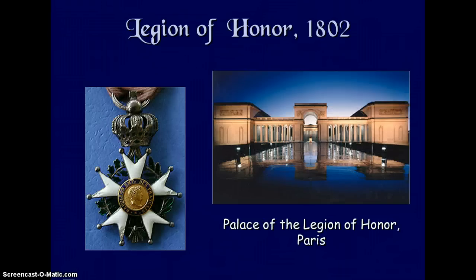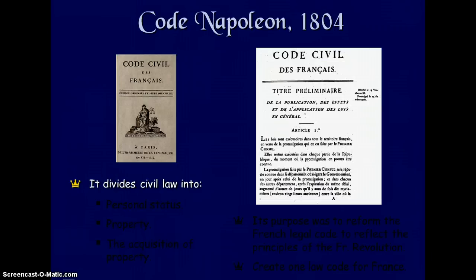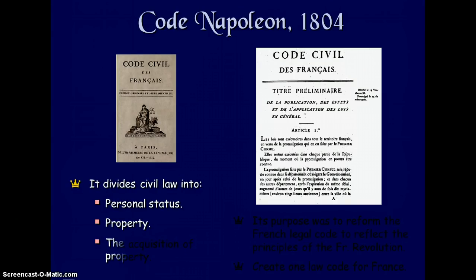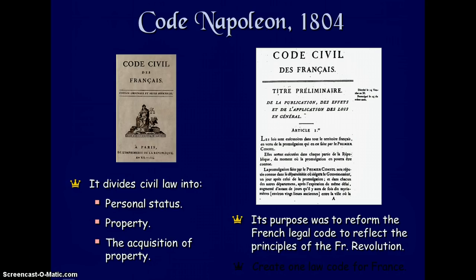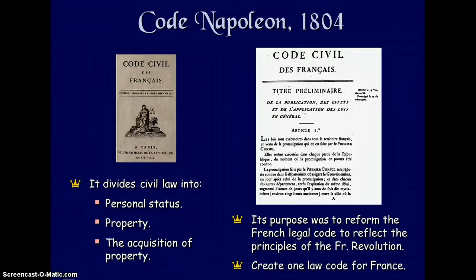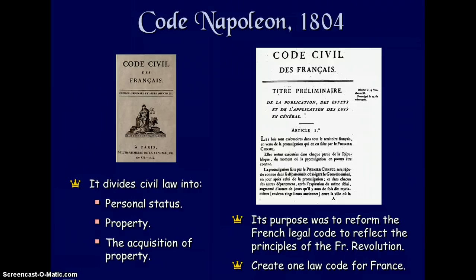The Palace of the Legion of Honor is in Paris. Napoleon's Code of 1804 divides civil law into personal status, property, and acquisition of property. Its purpose was to reform the French legal code to reflect the principles of the French Revolution and create one law code for all of France, instead of having several laws for each area.